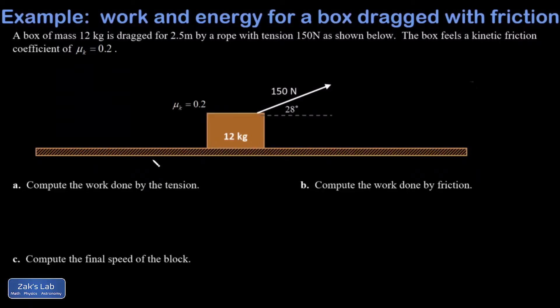This is a classic work and energy problem for a crate being dragged across the floor. I want to make sure everything ends up in the picture. So 12 kilograms dragged for 2 and a half meters — all the way from x equals 0 to x equals 2.5 — by a rope with a tension of 150 newtons. Kinetic friction coefficient: 0.2.